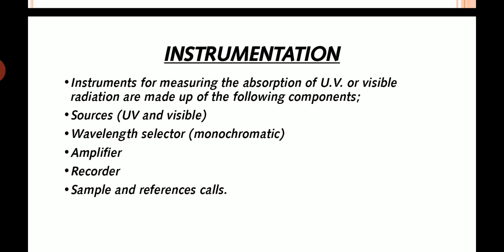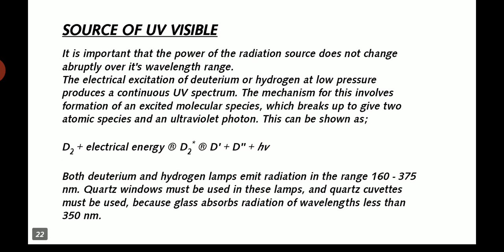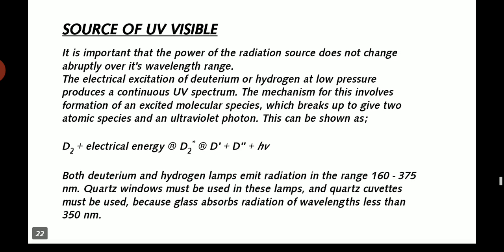Instrumentation. Instruments for measuring the absorption of UV visible radiation have the following components: sources, wavelength selector, amplifier, recorder, sample and reference cells. Source of UV visible: it is important that the power of radiation sources does not change appreciably over its wavelength range. The electrical excitation of deuterium or hydrogen at low pressure produces a continuous UV spectrum. The mechanism for this involves excited molecular species. This can be shown in ultraviolet photons. For example, D2 plus electrical energy. As you can see in the diagram.